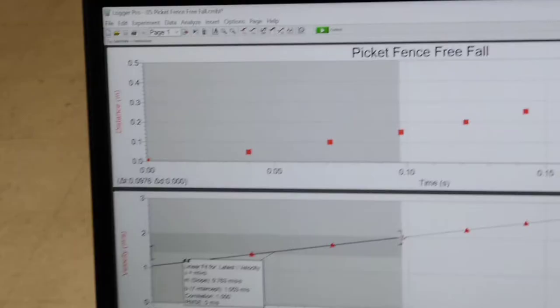Gravity is 9.8 meters per second squared, so that is very close to our measured value.